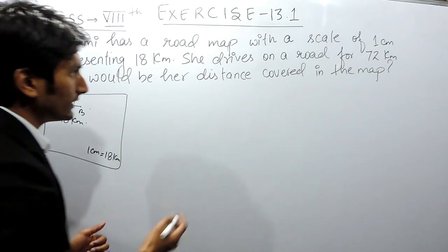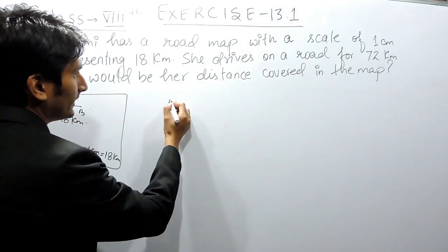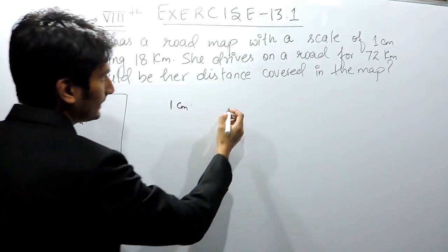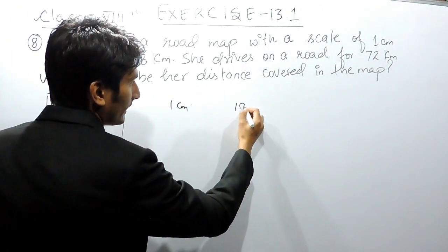So there are two things. One is measurement on map and second is actual distance.